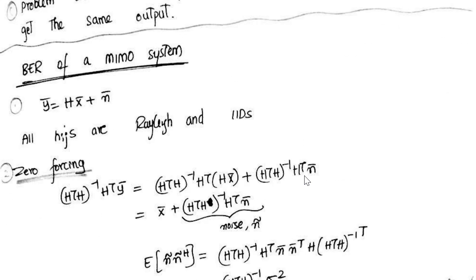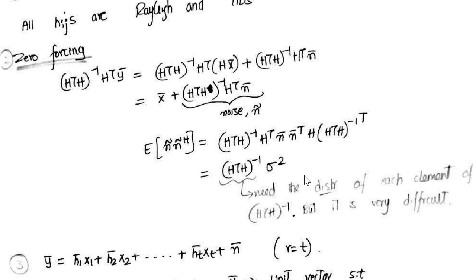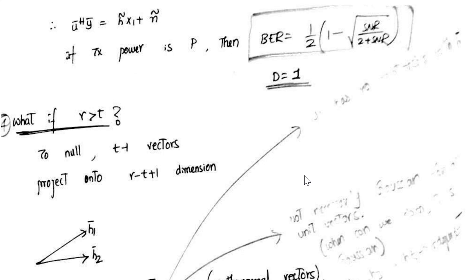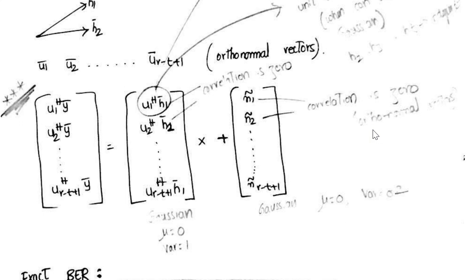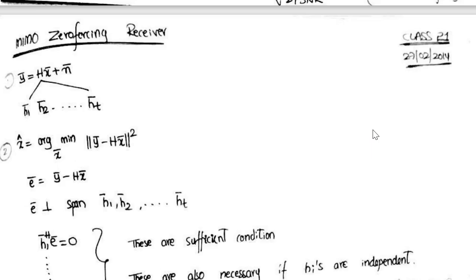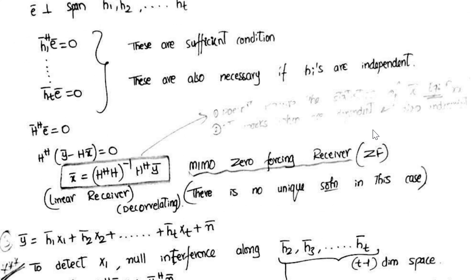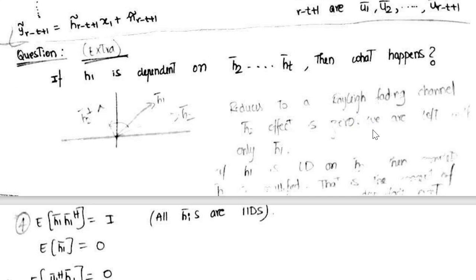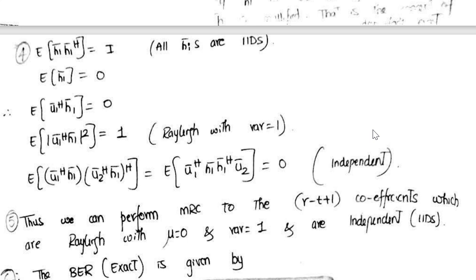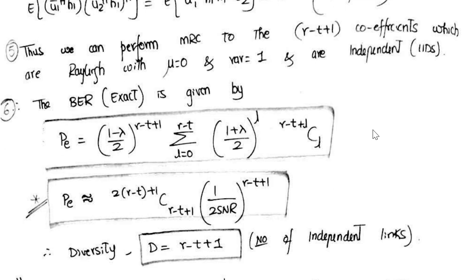Zero forcing solution. So many things I have actually written in pencil, they are not captured very well, but those are also very much important if you are able to see that. What will be the diversity in the case of zero forcing receiver, and probability of error equation.